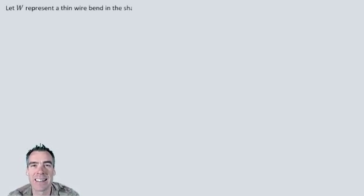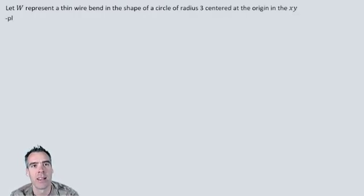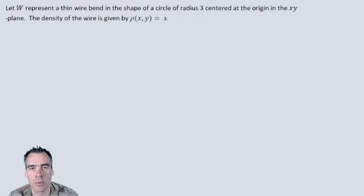Here's the problem statement. Let W represent a thin wire bent in the shape of a circle of radius 3 centered at the origin in the xy plane. The density of the wire is given by ρ(x,y) = x² + 1 grams per centimeter at every point (x,y) along the wire. Find the mass of the wire.